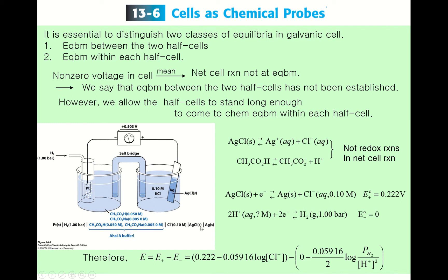This cell can be written in line notation as: Pt | H₂ | acetic acid (0.05 M), sodium acetate (0.005 M) ‖ Cl⁻ (0.1 M) | AgCl |